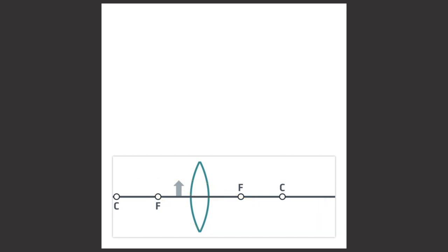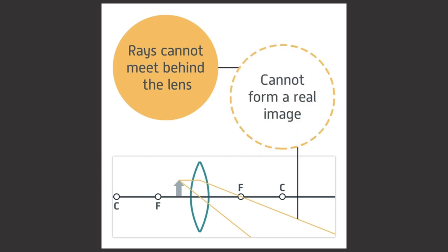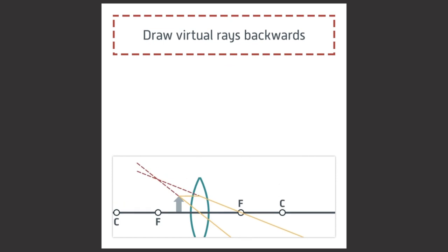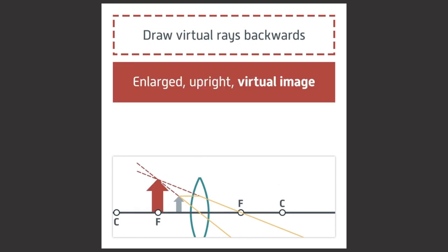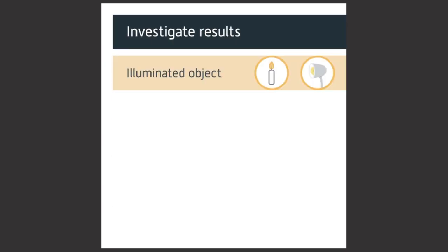If the object is between F and the lens, the rays cannot meet behind the lens and so cannot form a real image. If you draw virtual rays backwards from the real rays, you can form an enlarged, upright, virtual image. A virtual image is one that cannot be projected onto a screen.